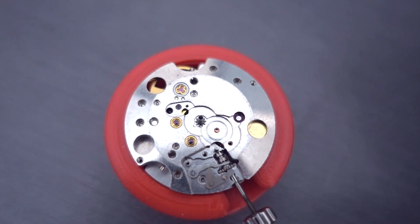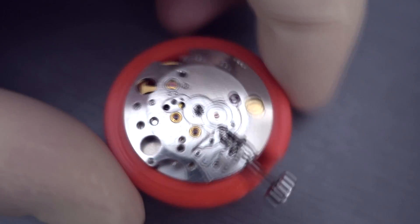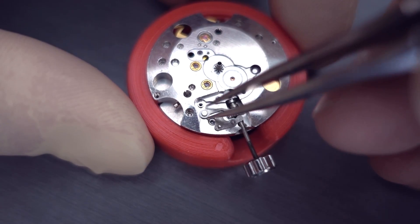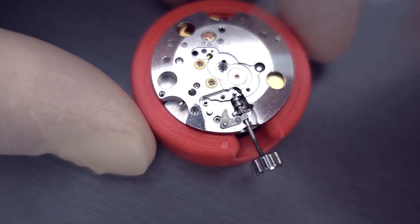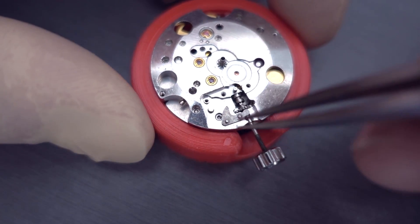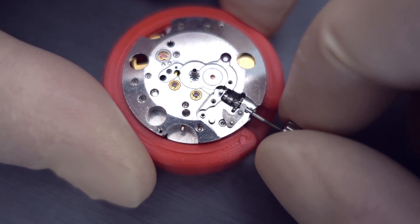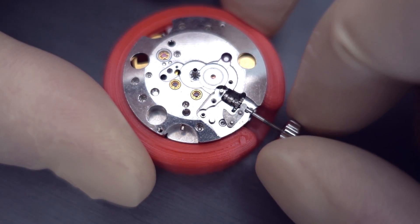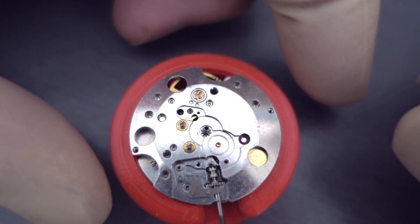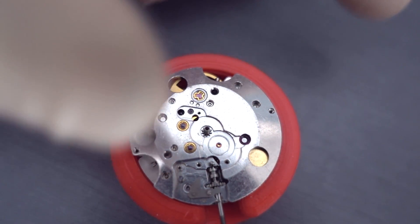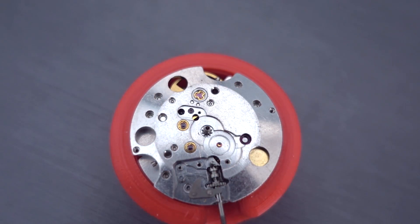And now we've just got the setting lever and the yoke left. So that's the yoke coming off there. And the setting lever. Now this watch has an old style setting lever on it. So it's actually got a screw which screws through from the train side into the setting lever.